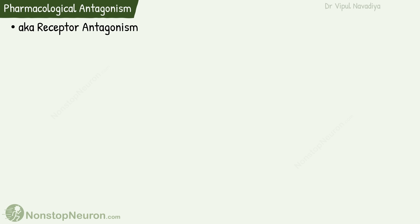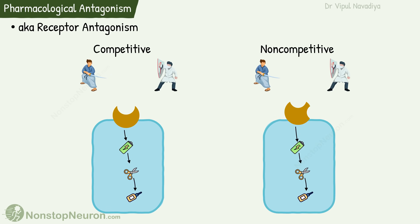Now pharmacological antagonism, also called receptor antagonism. It can be competitive or non-competitive. The fundamental difference is that in competitive antagonism, the agonist and antagonist compete for binding at the same site on the receptor, whereas in non-competitive antagonism, the agonist and antagonist bind at different sites or different molecules, so there is no direct competition between them.